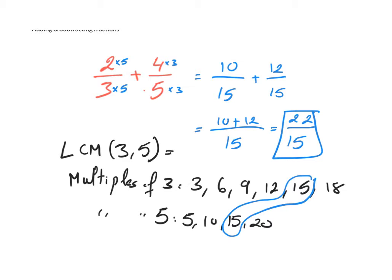That's how we get to 15: starting from three, you multiply by five to get 15 — that's five multiples. And for five, you multiply by three to get 15 — that's three multiples. So this is another way to find the LCD. Since three and five have no common prime factorization, we just multiply three with five.